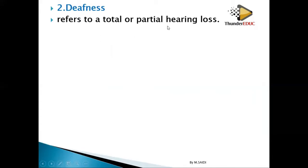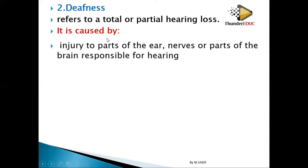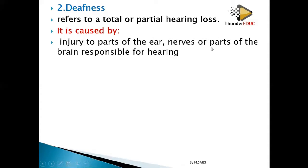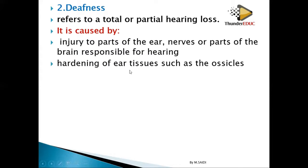Number two: deafness. It may be partial or total deafness. Partial deafness means you have difficulty hearing; total deafness means you cannot hear at all. It is caused by: number one, injury to part of the ear, nerve, or parts of the brain responsible for hearing — the brain cannot interpret what is being received. Number two, hardening of the ear tissue such as the ossicles, meaning the ossicles cannot move and vibrations cannot be transmitted to the inner ear to be detected by the organ of Corti.